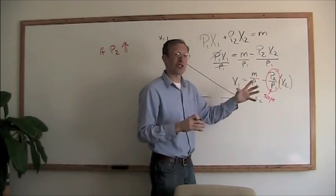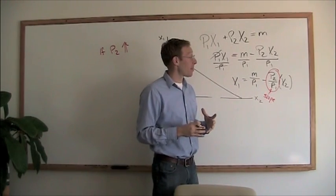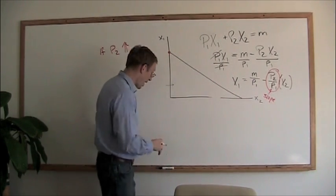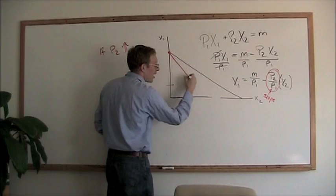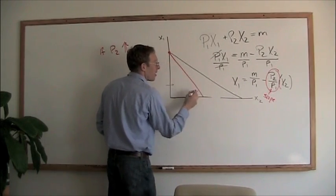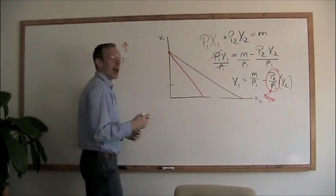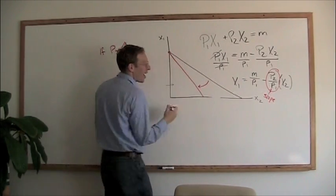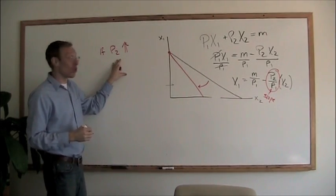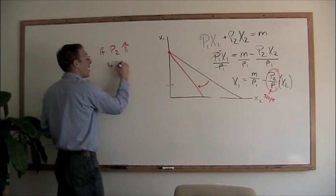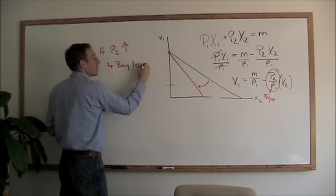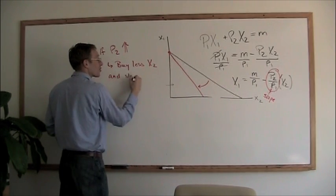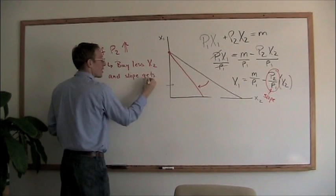If the price goes up, it means that the slope gets steeper. It also means that you're going to buy less of good 2, of x2. So what happens? The budget line is anchored at that intercept, but it rotates to the left as the price goes up. So the result is that you buy less of x2, and the slope gets steeper.